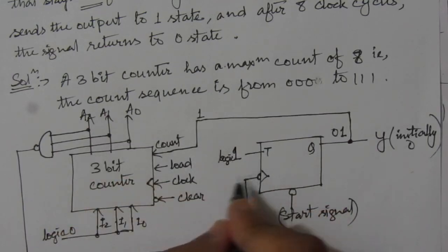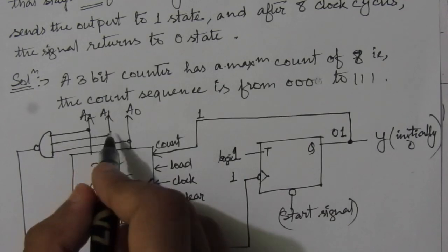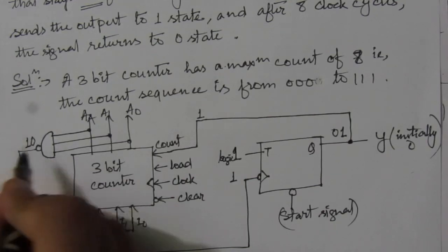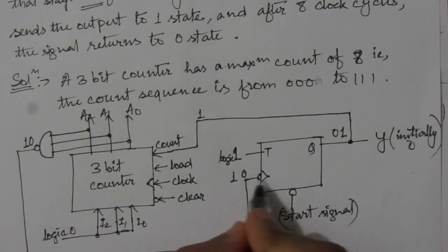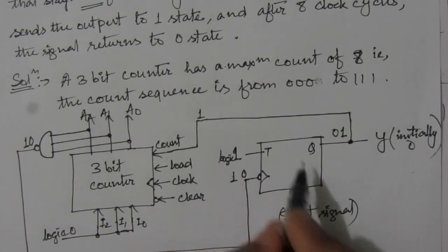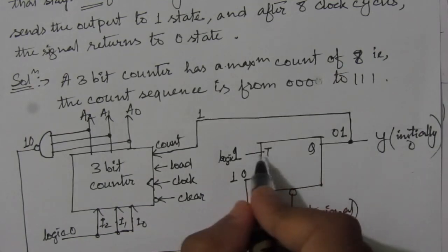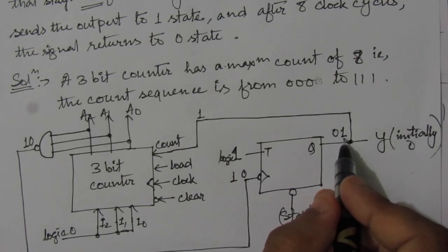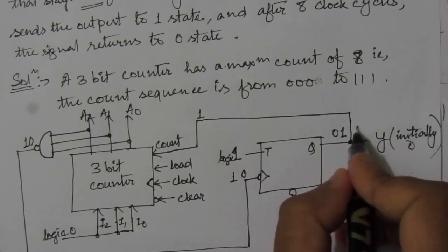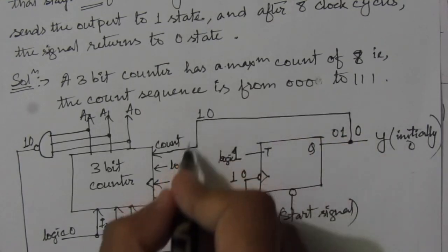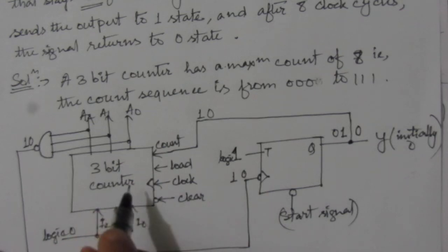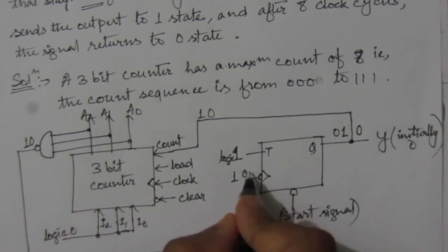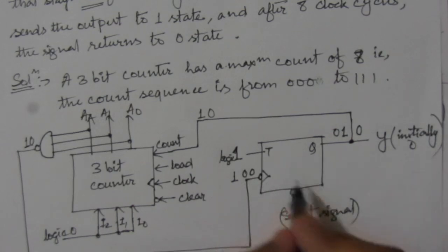When we have a 1-to-0 transition at the clock input, this T flip-flop will be activated. Since the toggle input T is logic 1, the previous output will be complemented — it will change from 1 to 0. When we have 0 at the count input, count equals 0, which means the counter will now stop counting and remain in the same state of 1, 1, 1. Since the counter stays at 111 with no further transitions, the flip-flop will be deactivated.